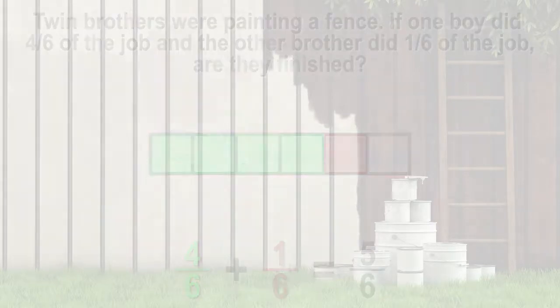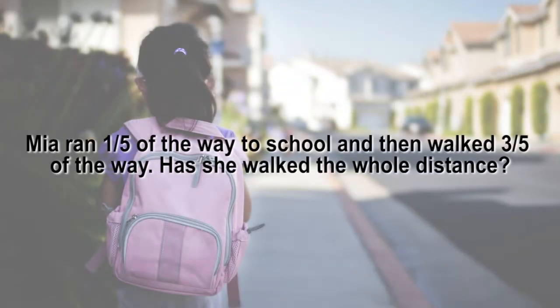Let's use a number line to solve the next problem. Mia ran 1 fifth of the way to school and then walked 3 fifths of the way. Has she walked the whole distance?